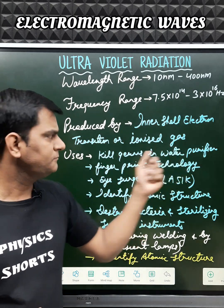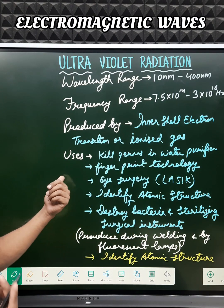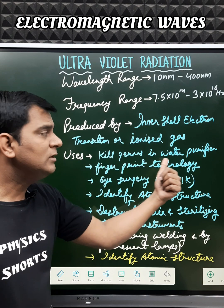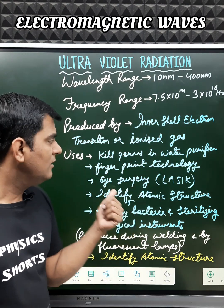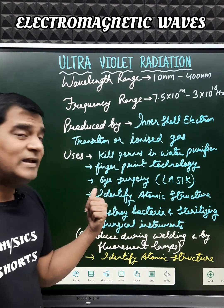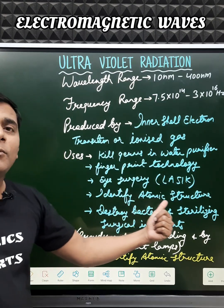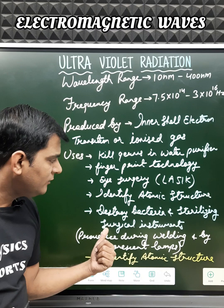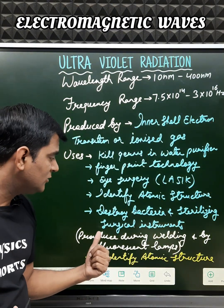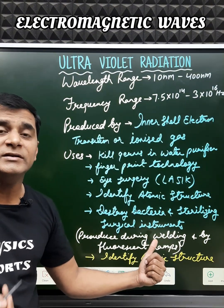The uses of ultraviolet radiation include killing germs in water purifiers, fingerprint technology, eye surgery through LASIK operations, identifying atomic structure, destroying bacteria, and sterilizing surgical instruments.